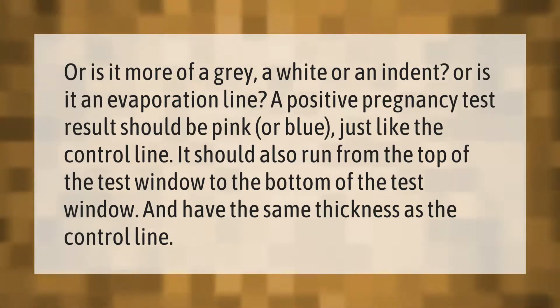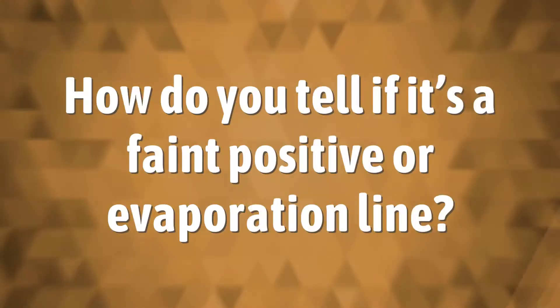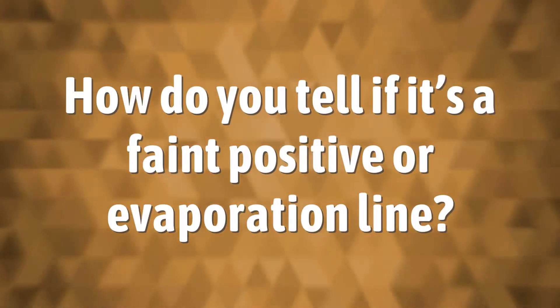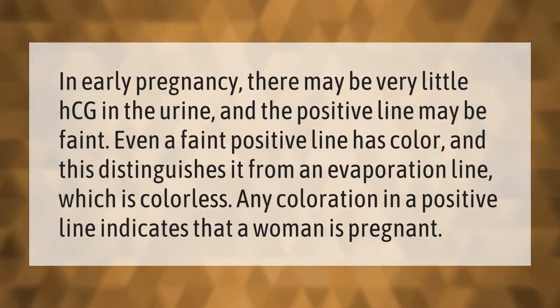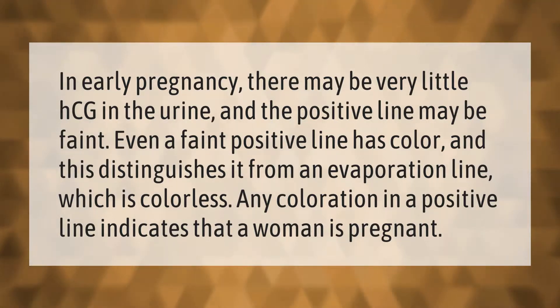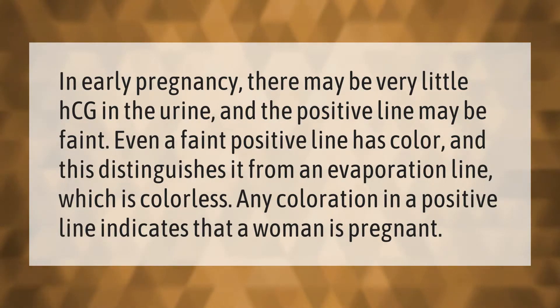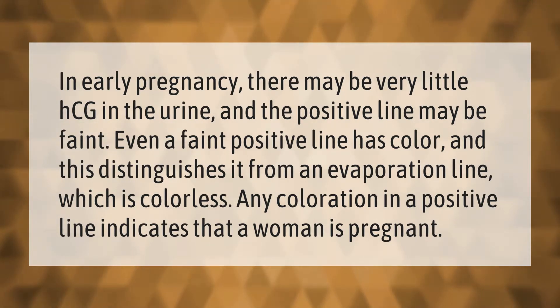In early pregnancy there may be very little HCG in the urine, and the positive line may be faint. Even a faint positive line has color, and this distinguishes it from an evaporation line, which is colorless. Any coloration in a positive line indicates that a woman is pregnant.